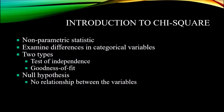The chi-square is used to examine differences in categorical variables, and it comes in two types: the test of independence and the goodness of fit.